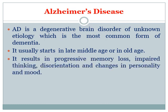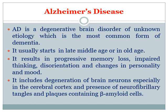Alzheimer's disease results in gradual and progressive loss of memory, impairment in thinking capability, leading to disorientation and confusion, and affects the personality and behavior of the person. This disease includes mainly three things: degeneration of neurons especially in the cerebral cortex, formation of neurofibrillary tangles, and formation of plaques containing beta-amyloid.